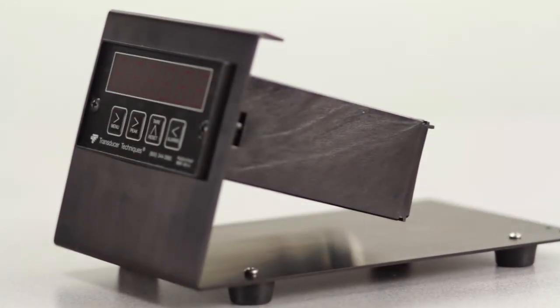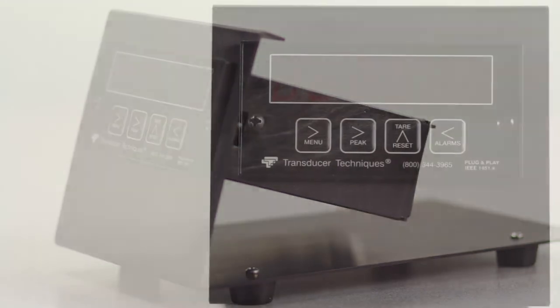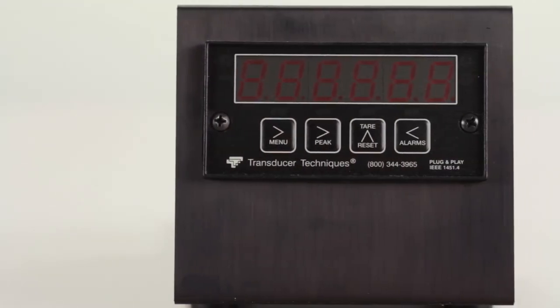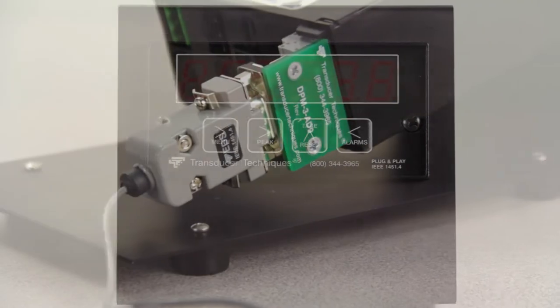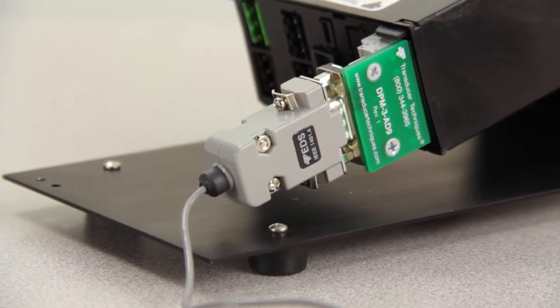This is our DPM3, which is a smart plug-and-play IEEE 1451.4 compliant meter. One of the great features using the plug-and-play system is when you plug a load cell into the DPM3, the first thing it does is read the EEPROM in the load cell.